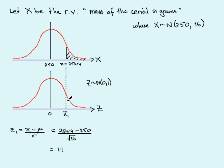Okay, so it's this area that represents the probability that I require. So let's just go over here and write the question out again. We want to find then the probability that our random variable X—that's the mass of the cereal in grams—is more than 254.4 grams, and this is equivalent to working out the probability then that our Z value is greater than 1.1 standard deviations above the mean.